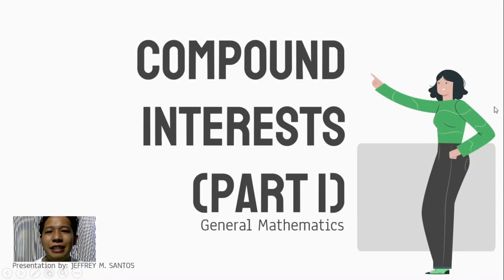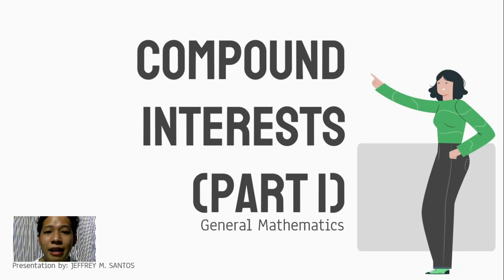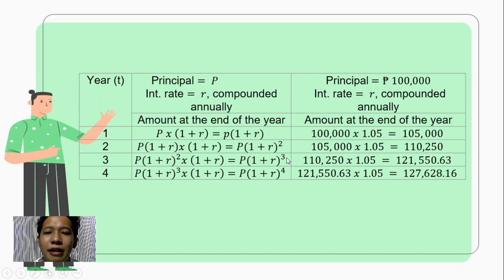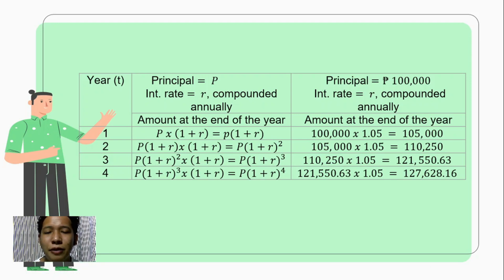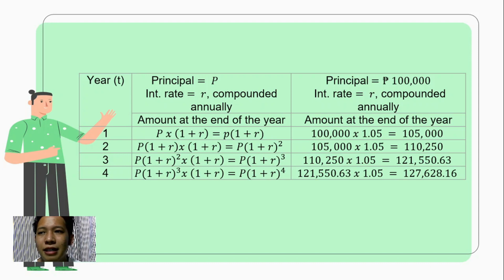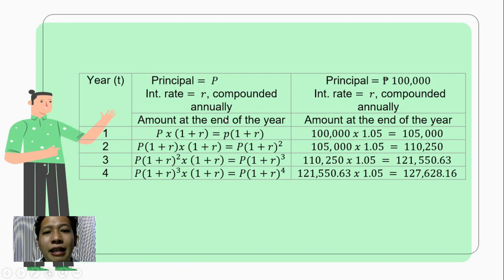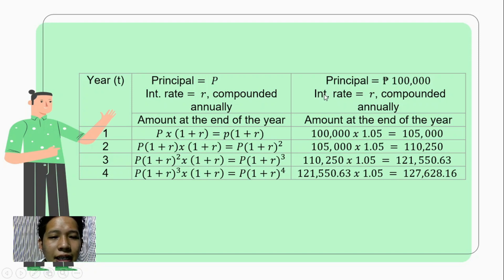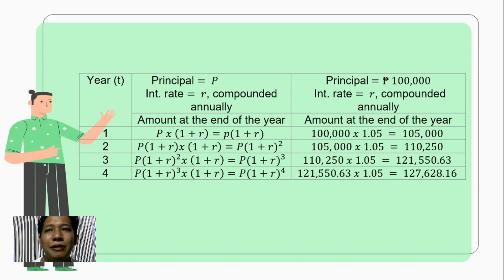Good day everyone. For today's video, we're going to have the continuation of interest — we will now be dealing with compound interest. This is the first part of the video. We have defined compound interest to which we compute the interest with accumulated past interest. To illustrate, suppose your principal is one hundred thousand and our interest rate is compounded annually.